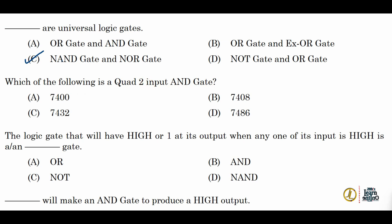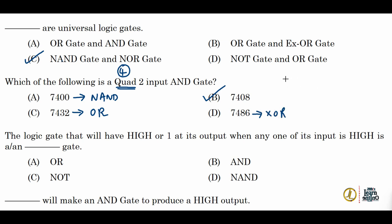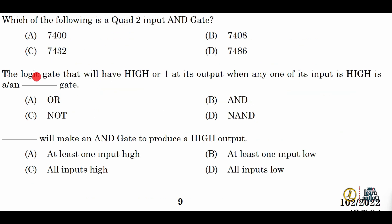Next: which of the following is a quad two-input AND gate? The answer is 7408 — it is the two-input AND gate. Quad means there will be four gates in the IC, so in the 7408 IC there are four two-input AND gates. For reference: 7400 is the NAND gate, 74132 is NOR gate, 7486 is XOR gate, 7402 is NOR gate, and 7404 is NOT gate. Remember all these digital ICs.